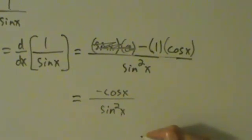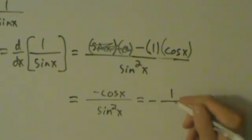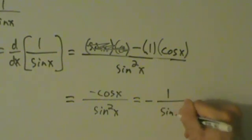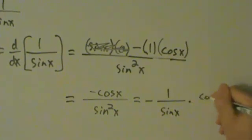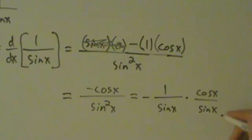So we can actually rewrite this as minus 1 over sine of x times cosine x over sine of x.